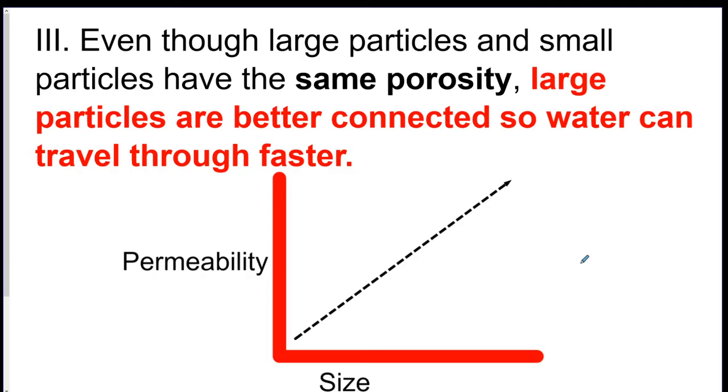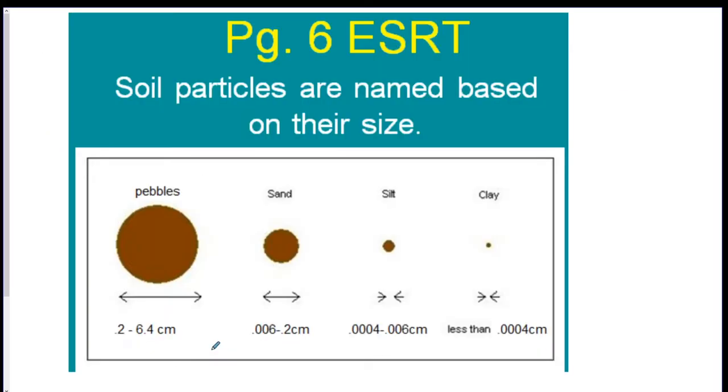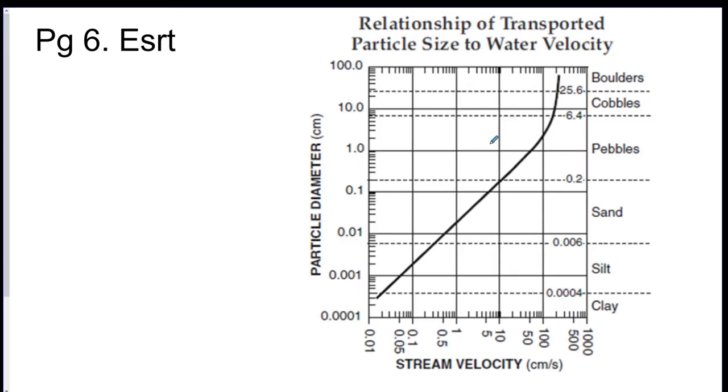The bigger the particles, the easier it is for the water to flow through it. Therefore, the permeability, how easy it is for the water to get through, will go up. So when you see the word permeability, you're going to think how easy it is for the water to get through it. In this one, pebbles, sand, silt, and clay, pebbles are going to have the highest permeability because they're the biggest. And then clay will have the lowest permeability because it's the smallest. That's on this chart. So let's see how we do.